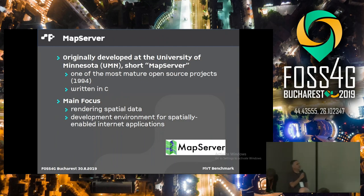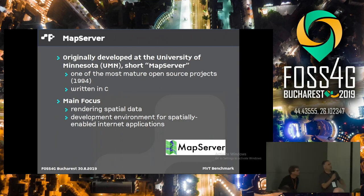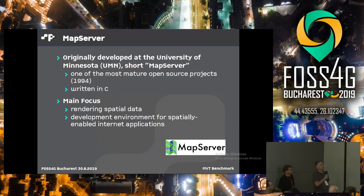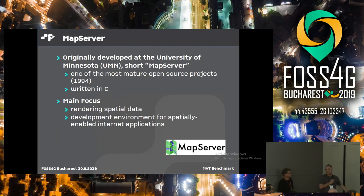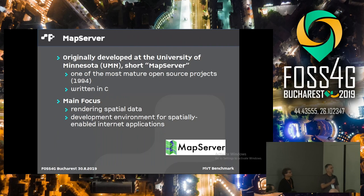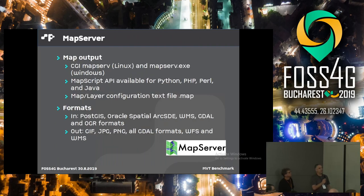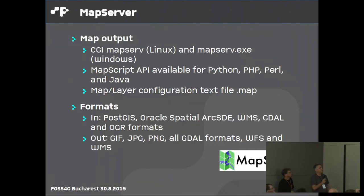I've been using MapServer for many years — it's one of my favorite rendering engines, one of the dinosaurs in the room since 1994, written mostly in C and C++. We had some help and input from Steve Lyman, the original programmer. MapServer has two modes: a CGI/FCGI application and an API in many different flavors known as MapScript. It's a general-purpose engine for rendering all kinds of output. The MVT tile support is very new — it came in version 7.2.